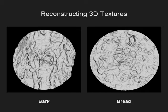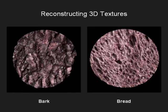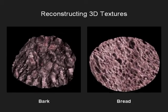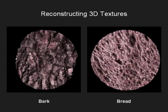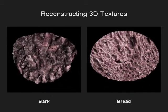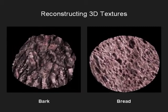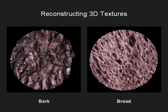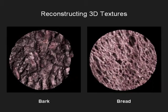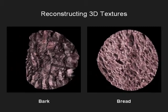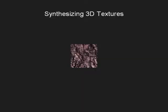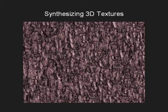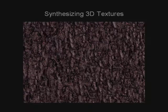This approach has two benefits over conventional stereo. First, the multiple views are captured in a single image. Second, since the epipolar lines are radial, the system does not break down when features are aligned with rows or columns of the image. From these reconstructions, we can synthesize novel 3D texture samples.